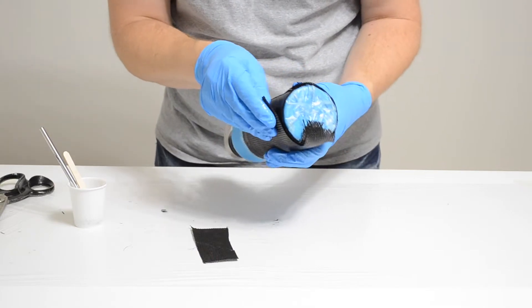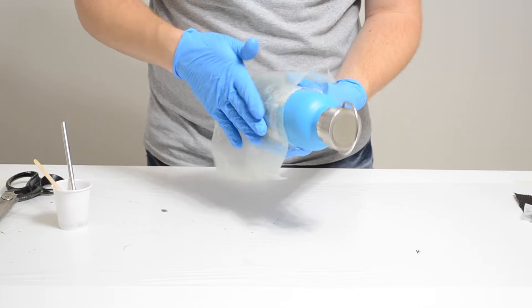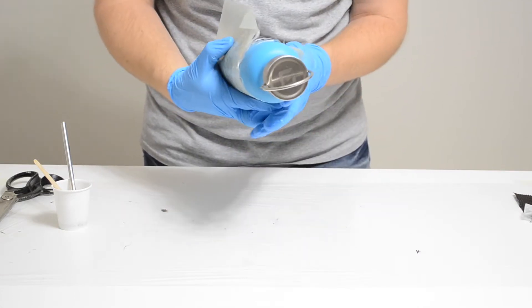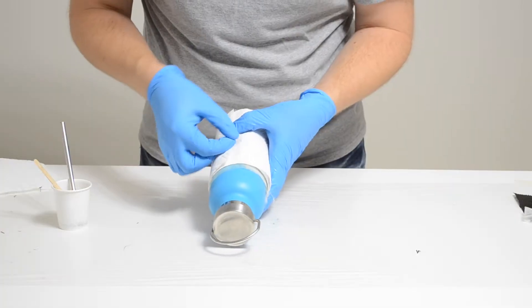My camera timed out so I missed some parts, but I applied some peel ply and then you can see me here applying perforated release film over the top of the peel ply. I followed it up with two layers of paper towels to act as a breather and I taped them down to make sure they didn't move.